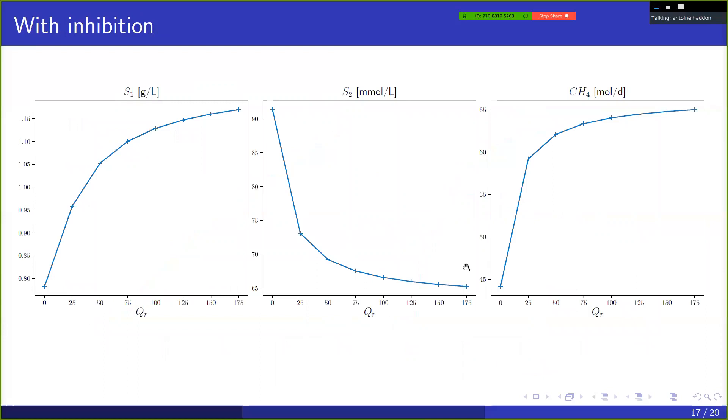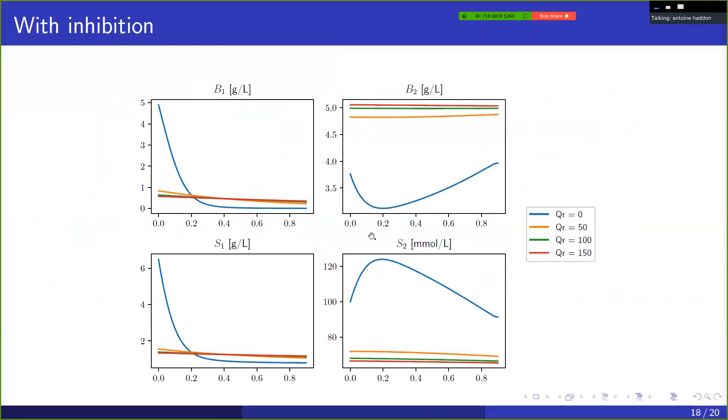So with these values, you can see that actually with more recirculation, we have a better performance. We have more biogas produced and less substrate coming out. And so again, we can see this as well in the profiles. What's interesting to see is that in this case of inhibition, actually the profiles are a lot more homogenous.